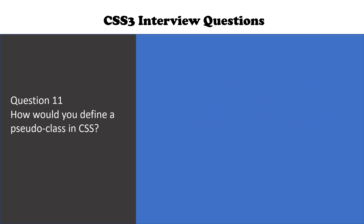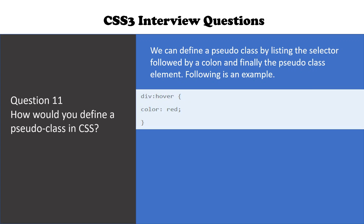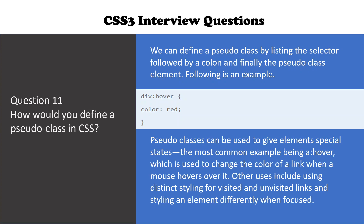How would you define a pseudo class in CSS3? And friends, let me tell you it is a very important question that is being asked in interviews. We can define a pseudo class by listing the selector followed by a colon and finally the pseudo class element. Following is an example: a div with the pseudo class hover given the color red, so whenever we take our mouse on the div element the color of the div will change to red. Pseudo classes can be used to give elements special states, the most common example being the anchor tag with the hover class.